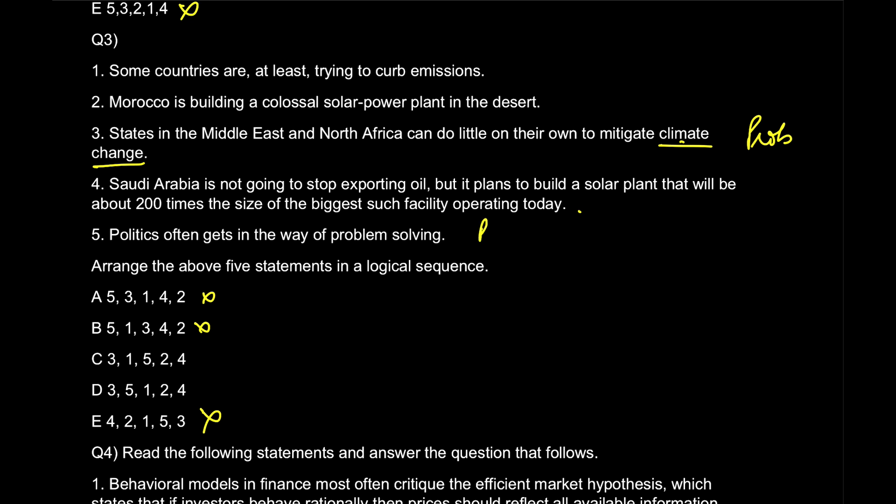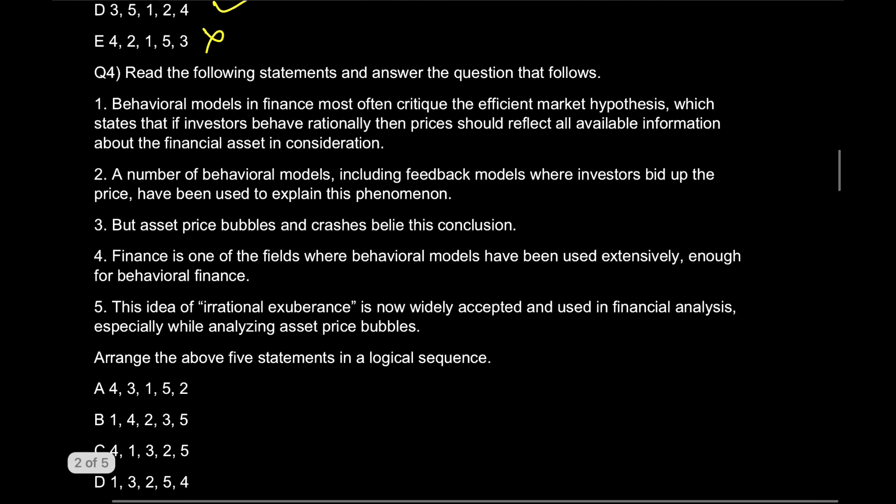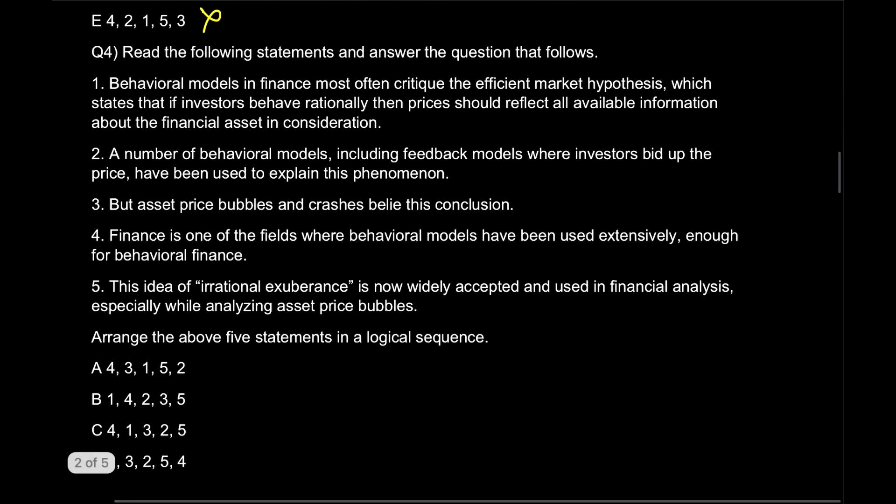But if you have any doubt in your mind, please take the help of linkage. Try to take the help of linkage. For example, I can say the problem is this and the extended solution, or the reason of the problem is this. What is the problem? Climate change in these countries. What is the reason? Politics is the reason. So can we make a continuation of three and five? Of course yes. And after that come some countries which are trying to curb the emission. So three five one combination is option D. D is the correct answer.